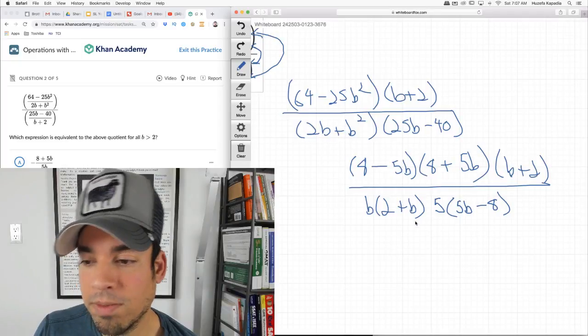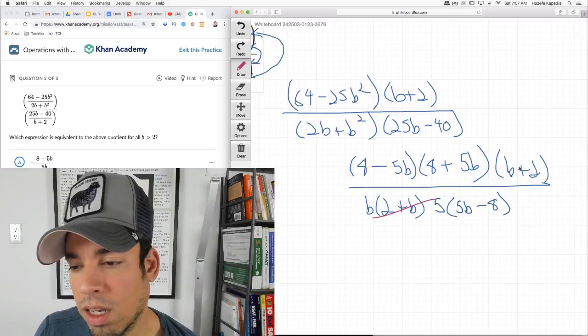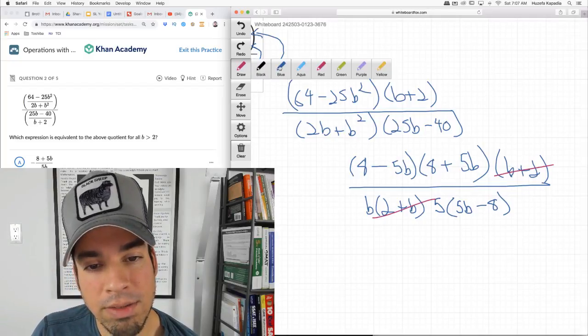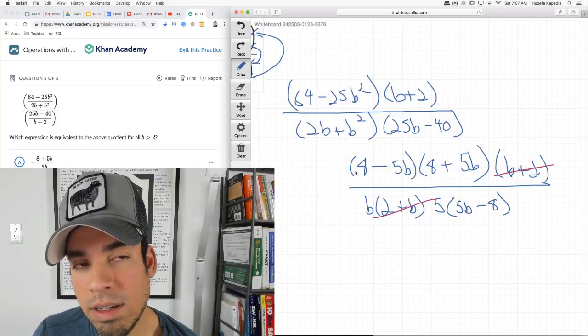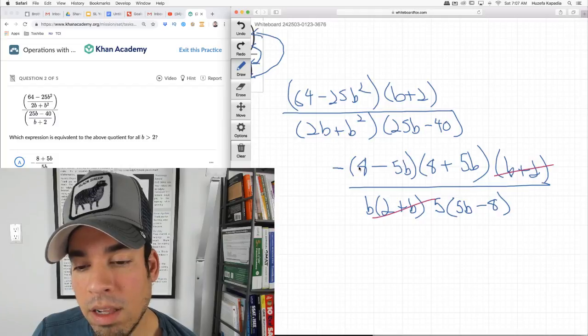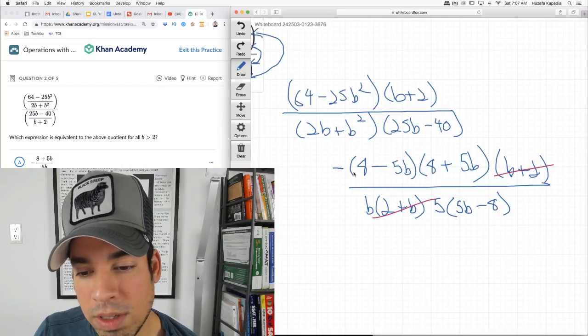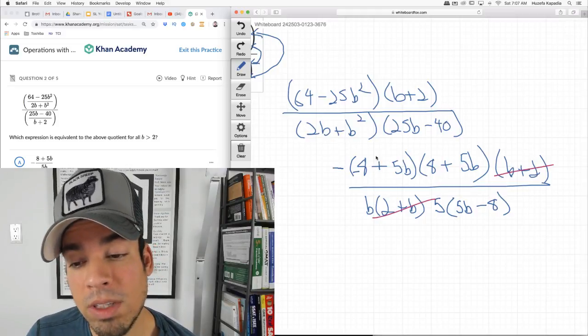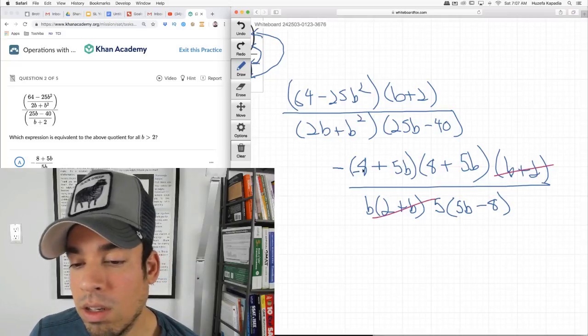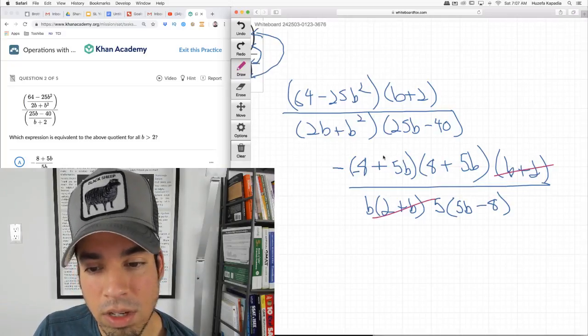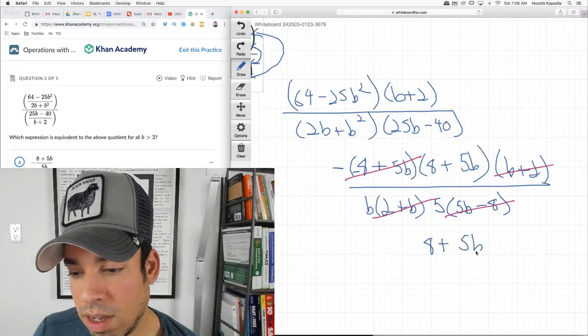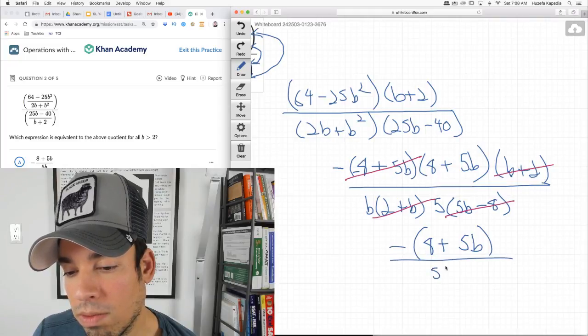First things first, I'm going to knock out these guys because there's b plus 2, 2 plus b, same thing. Now this is almost the same, but what I can do is factor out a negative 1 from this. And if I do that, the signs of these switch. Then this becomes negative 8, this becomes positive 5b. You can see that it's the same because I pulled a negative out. You can always flip the signs in that way. Now I can cancel these guys out.